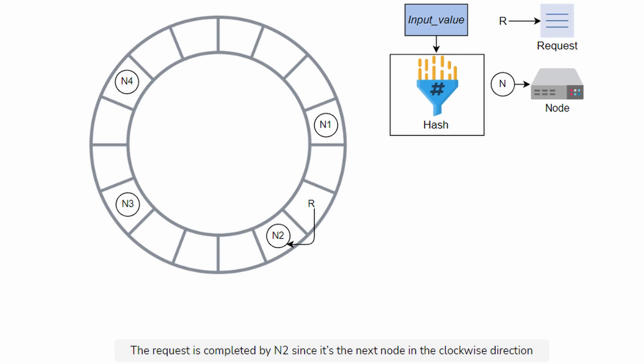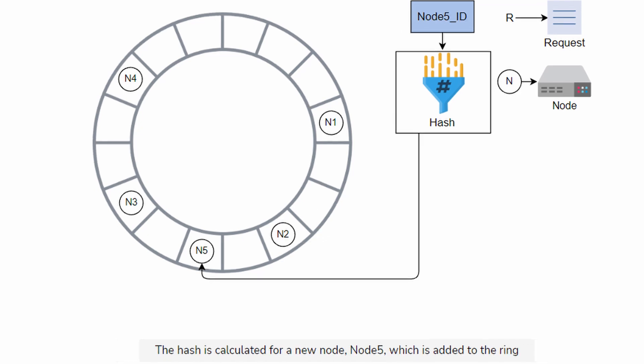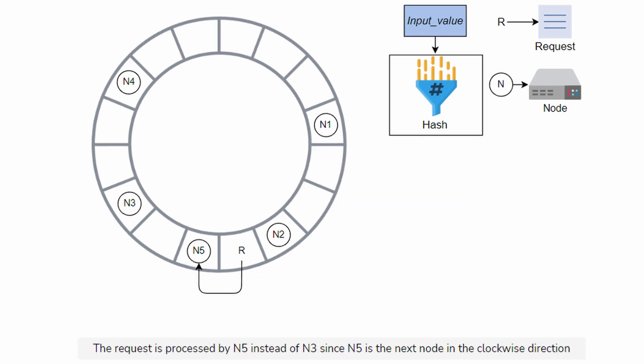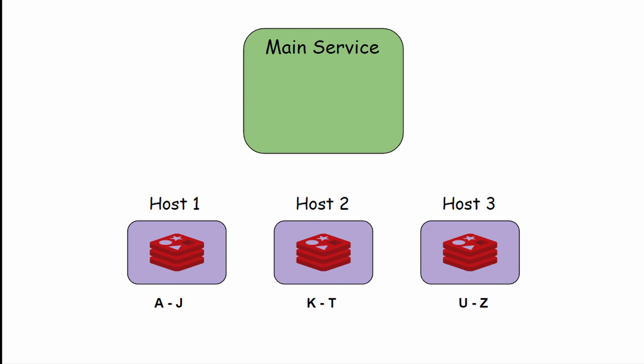What happens when we add a new host to the cluster? The hash is calculated for the new node, node 5, which is added to the ring like before. And if node 5 is the node before a new request, node 5 will be the one to serve that request. Now we know about how the service determines which host to send a request to.